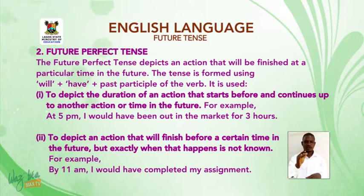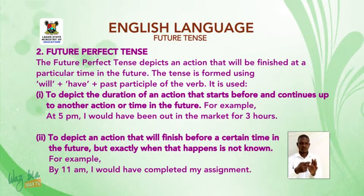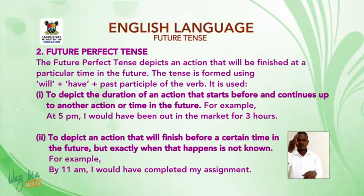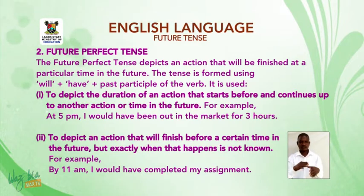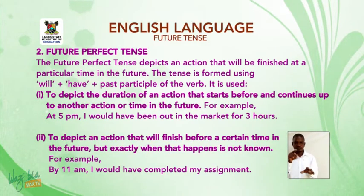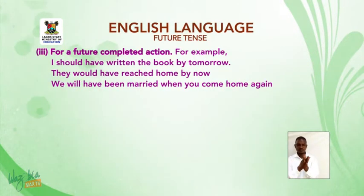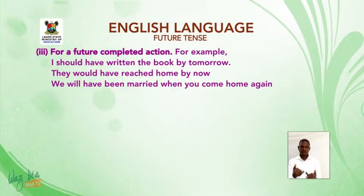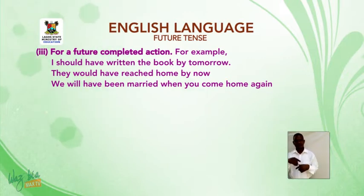For example: At 5 pm, I would have been out in the market for 3 hours. Second, to depict an action that will finish before a certain time in the future, but exactly when is not known. For example: By 11 am, I would have completed my assignment. For future completed action: I should have written the book by tomorrow. They would have reached home by now. We will have been married when you come home again.